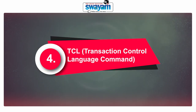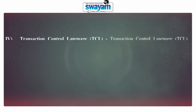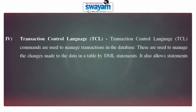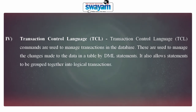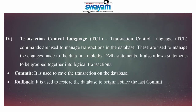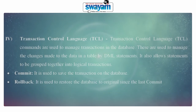The fourth category of command is Transaction Control Language (TCL). TCL commands are used to manage transactions in the database. These are used to manage changes made to data in a table by DML statements, and allow statements to be grouped together into a logical transaction. Commit and Rollback are the commands under this category. Commit is used to save the transactions on the database, and Rollback is used to restore the database to its original state since the last commit.